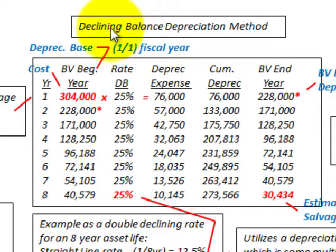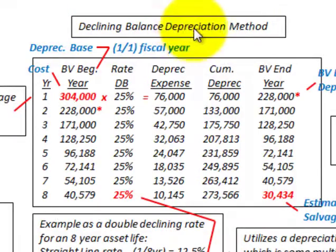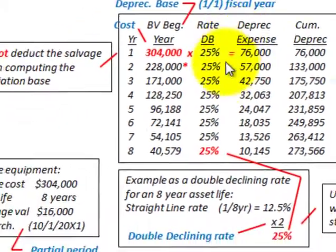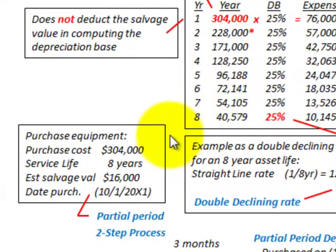What we're going to be looking at here is the Declining Balance Depreciation Method. We're going to go through a typical example to determine the depreciation on a yearly basis using this Declining Balance Method.